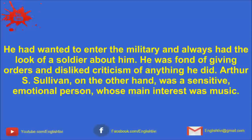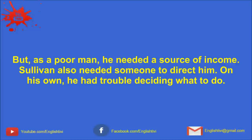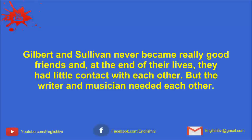He was fond of giving orders and disliked criticism of anything he did. Arthur S. Sullivan, on the other hand, was a sensitive, emotional person whose main interest was music. Sullivan came from a poor family, but his musical talents and good looks had helped him to succeed. Sullivan wanted to write serious classical music, but as a poor man, he needed a source of income. Sullivan also needed someone to direct him. On his own, he had trouble deciding what to do.